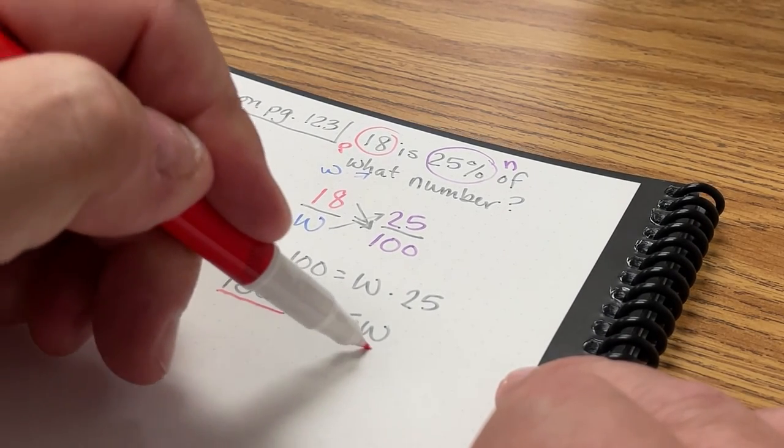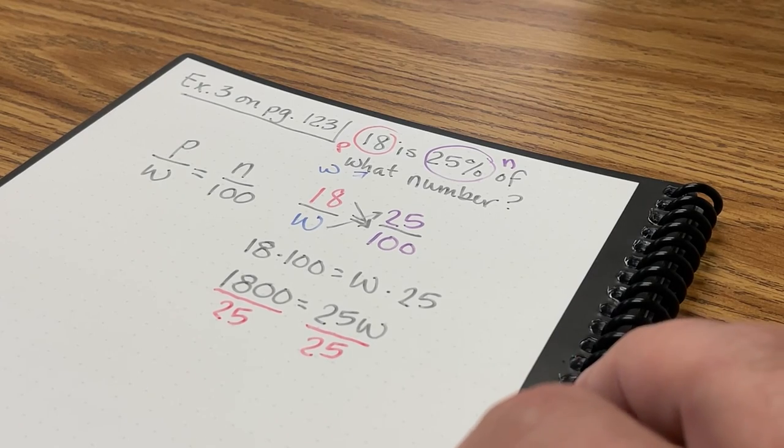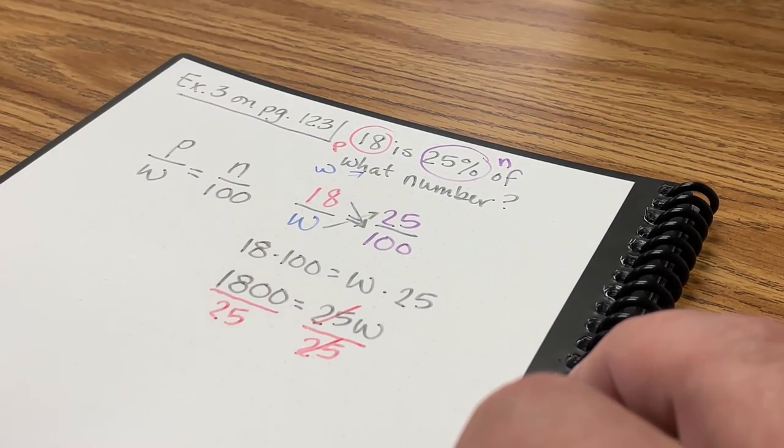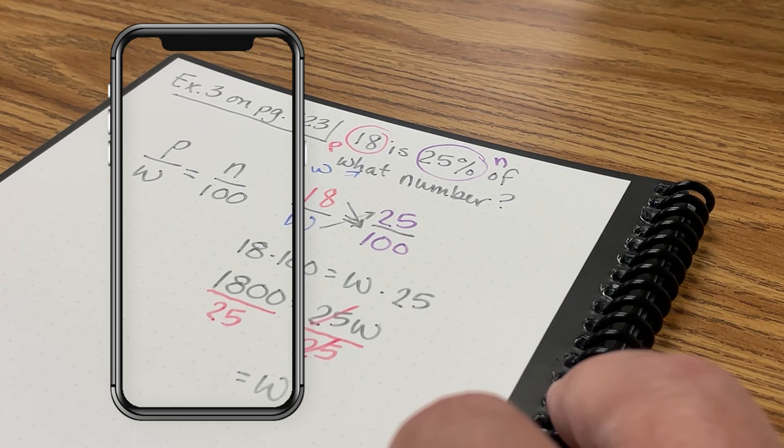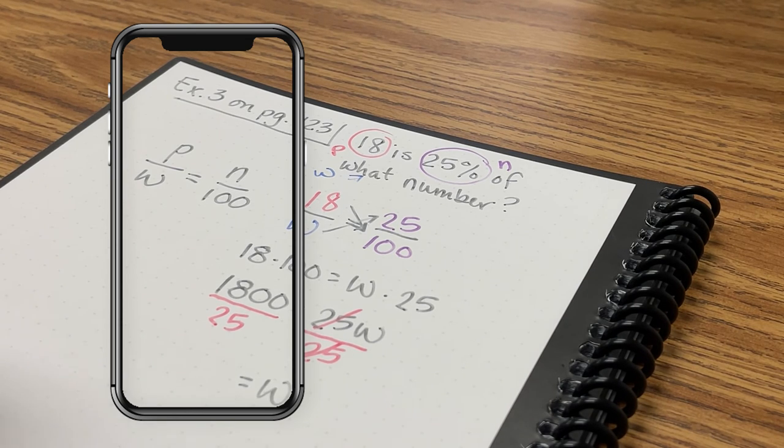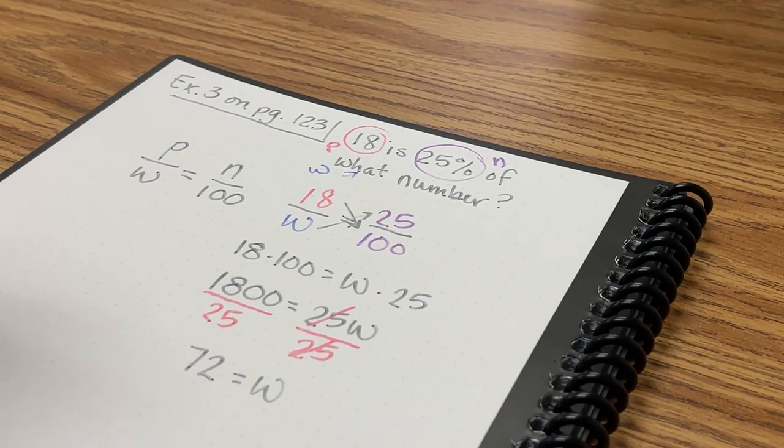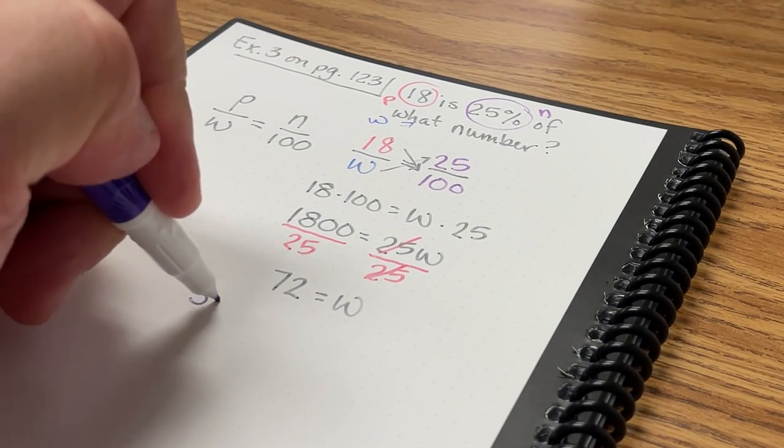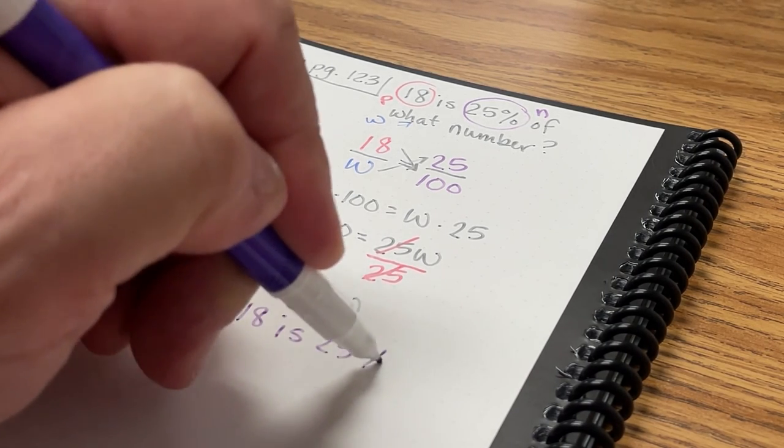To determine what W is, I'm going to divide both sides of my equation by the coefficient of W, which is 25. 25W divided by 25 will just be W. And 1800 divided by 25 is 72. So 18 is 25% of 72.